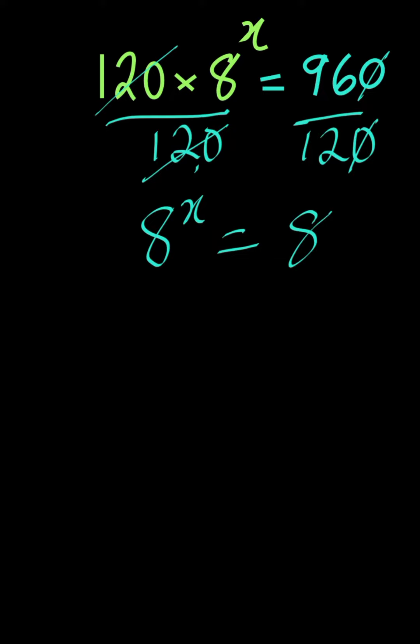The bases are the same thing. You can have 8 and 8 here. Once the bases are the same thing, you can just equate the powers. So this 8 here can be written as 8 to the power of 1, because 8 to the power of 1 is still the same thing as 8.